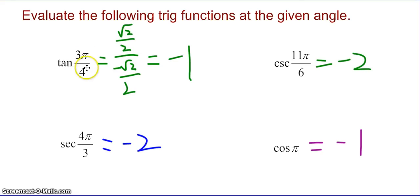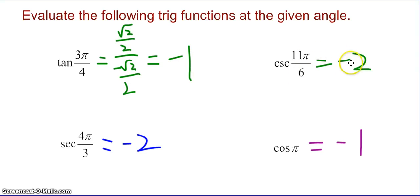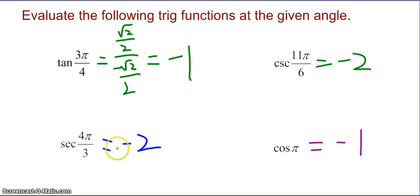Tangent of 3π/4 equals negative 1: the y value is root 2 over 2 and the x value is negative root 2 over 2, so dividing gives negative 1. Cosecant of 11π/6 is the reciprocal of the y value; the y value is negative 1/2, so the reciprocal is negative 2. Secant of 4π/3 is the reciprocal of the x value at 4π/3; the x value is negative 1/2, so secant of 4π/3 is negative 2. Cosine of π is the x value at π, which is negative 1.